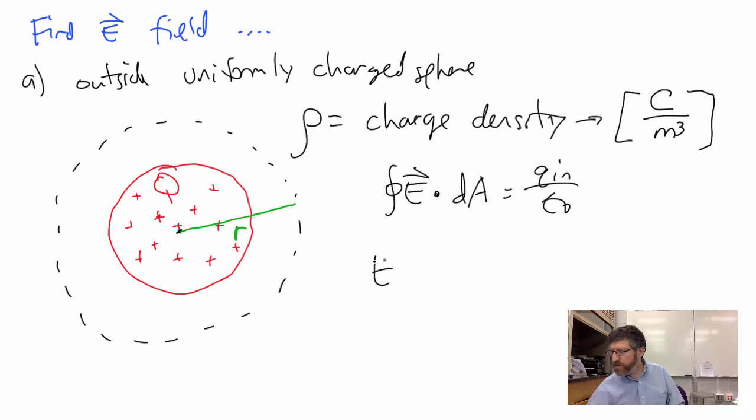The field is just going to be, look at the notes from before, it's exactly the same thing. It will be 1/(4πε₀) times capital Q over R². It's exactly the same field as before. Gauss's law would show us that too. Here is where it gets interesting.